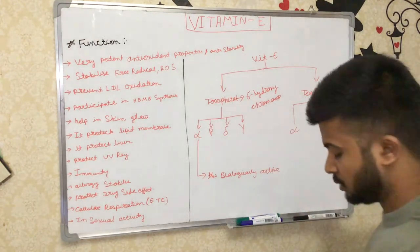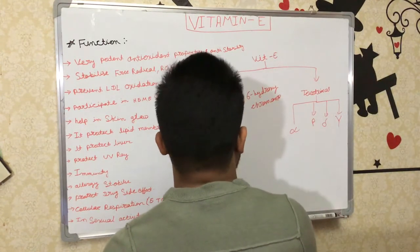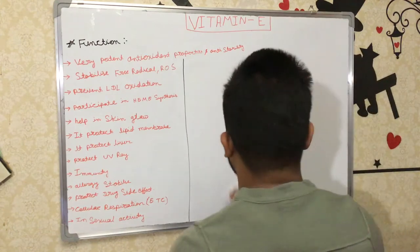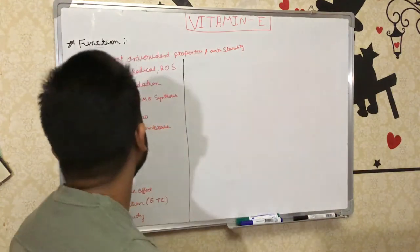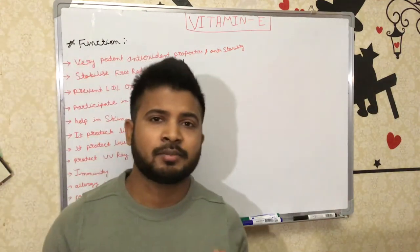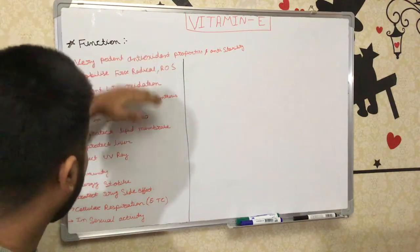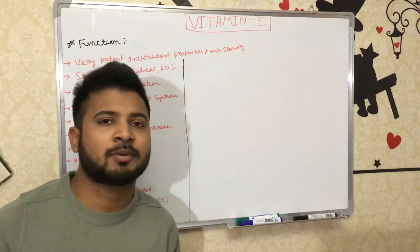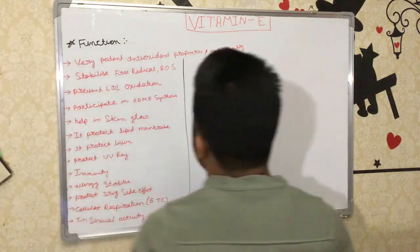Now let's discuss the first function — how it performs in the body. Vitamin E is a very useful and very commonly used vitamin in daily life. The first function is as a very potent antioxidant and it has anti-sterility properties. Anti-sterility means it prevents infertility. All functions of Vitamin E depend on its antioxidant properties. If antioxidant properties are lost or lacking, all functions become inhibited or will work very slowly.